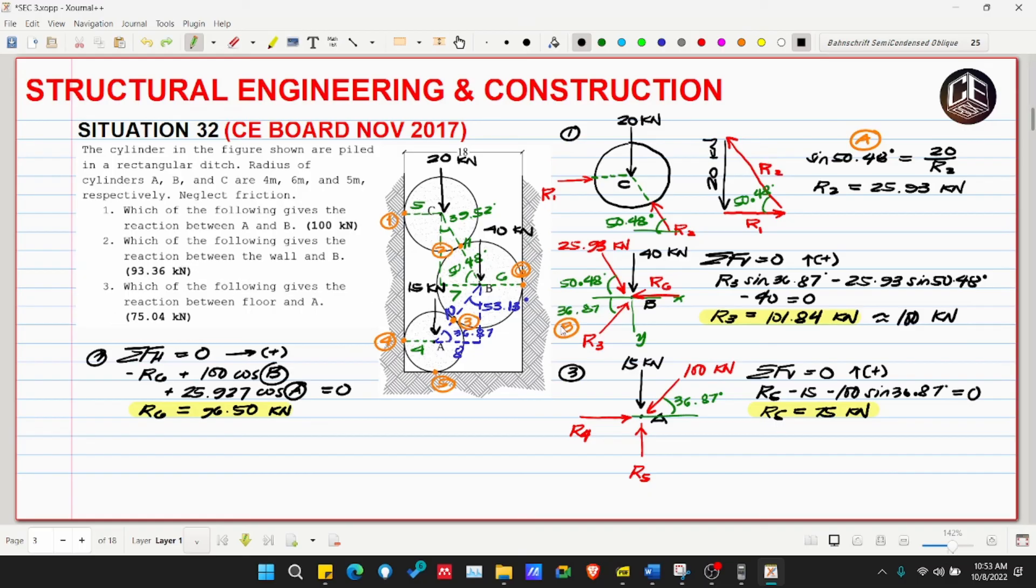So this problem will be tricky or difficult if you don't use the 18 meters and if you don't use the given radii. Once you can't use those, you can't get the angles, and you can't get the forces. For this type of cylinder problem, especially from 2017, you need to look at the given dimensions and use the angles. If you're used to slope, that's okay too, you can also use slope. That's how simple it is to solve Situation Number 32.